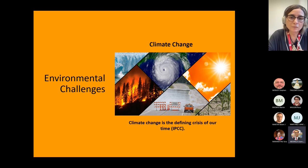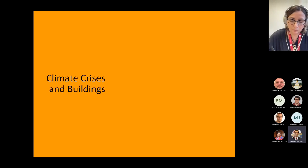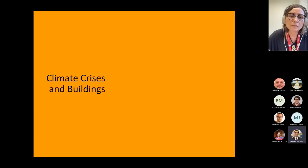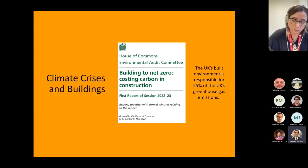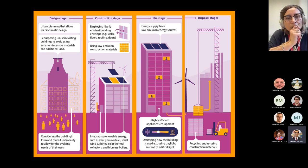Climate change is the defining crisis of our time, according to the Intergovernmental Panel on Climate Change. Since most activities take place in buildings, buildings are responsible for 21% of global greenhouse gas emissions. Here in the UK, according to the House of Commons Environmental Audit Committee, the built environment is responsible for 25% of the UK's greenhouse gas emissions — more than the world average. So architects and designers have a role in addressing climate change through reducing the carbon footprint of buildings, across the design, construction, usage, and disposal stages.